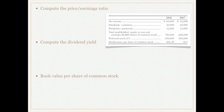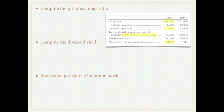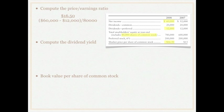Let's take a look first at the price-earnings ratio. We need the market price per share, which is $16.50, and the earnings per share. To calculate earnings per share: net income of $60,000 less preferred dividends of $12,000, divided by 80,000 shares of common stock outstanding. This gives us a price-earnings ratio of 27.5, meaning our stock is selling at 27.5 times one year's earnings per share.